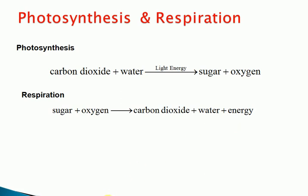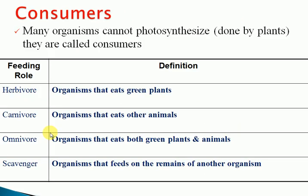Green plants are producers. Producers are all green plants, producing energy in the form of sugar — the form of chemical energy from solar energy. Many organisms cannot photosynthesize; they are called consumers. Photosynthesis is done by green plants.